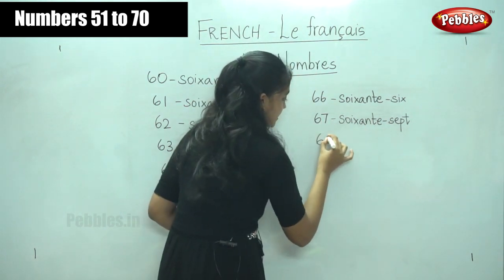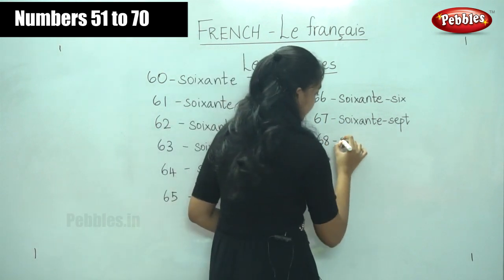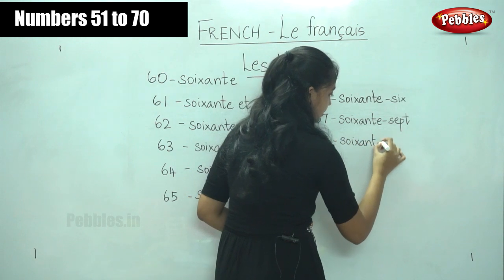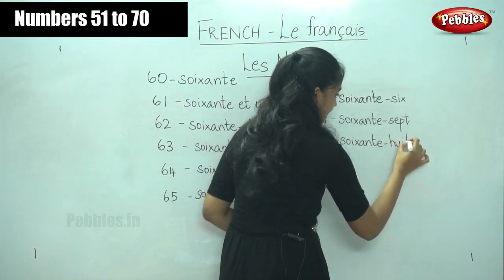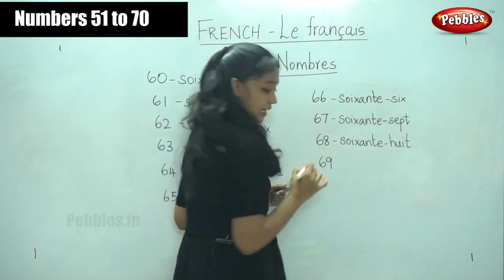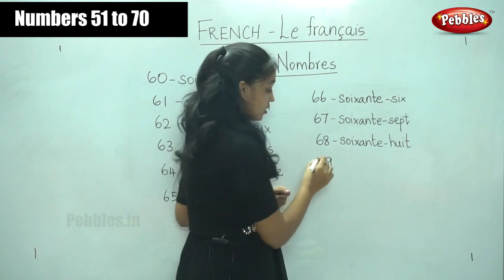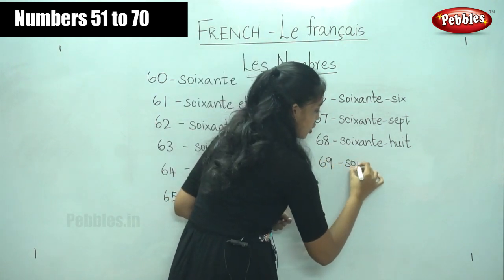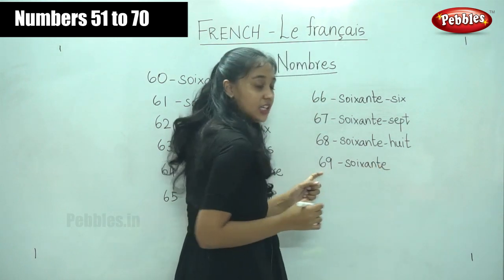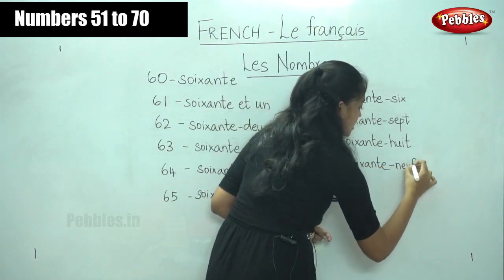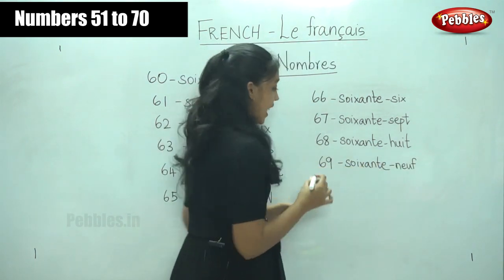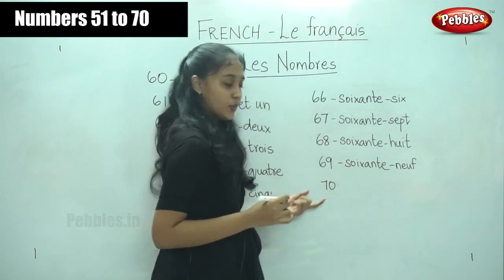Next for number 68 — soixante huit, sixty and huit — soixante huit. Next number 69 — what would we say for number 69? Soixante neuf — 60 and neuf, sixty-nine — soixante neuf.